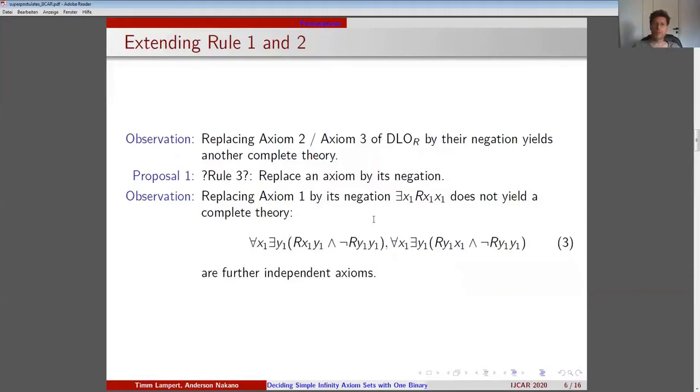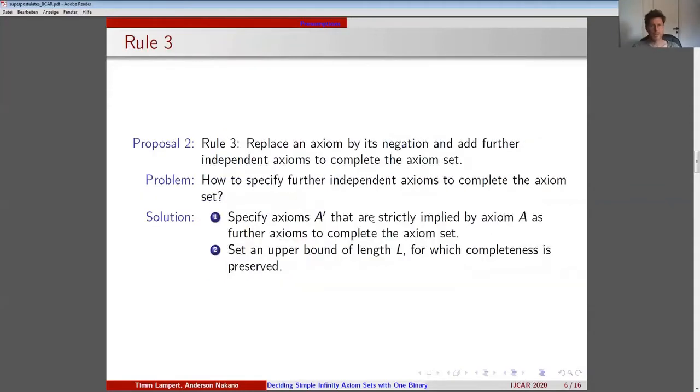We start with the following observation: replacing axiom 2 or axiom 3 of DLOR by their negation yields another complete theory. So one might propose the following rule: replace an axiom by its negation. However, replacing axiom 1 by its negation does not yield a complete theory. The formulas in 3 are further independent axioms. This motivates the following idea of a third rule: replace an axiom by its negation and add further independent axioms to complete the axiom set.